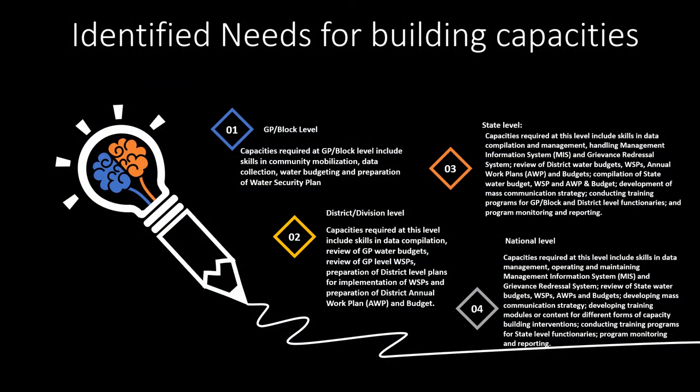As we have seen in the previous slide, the capacity building roles and responsibilities at each level in the program are different, as are the capacity building needs identified at different levels. The GP level functionaries need to be trained on planning water supply and demand, creating water budgets, and strengthening of village water management committees. At district level, the focus could be on compilation and review of the water security plans submitted by the villages.